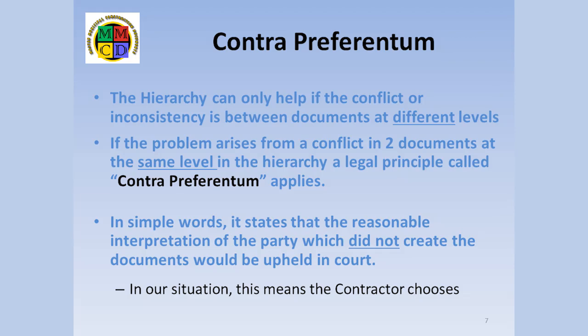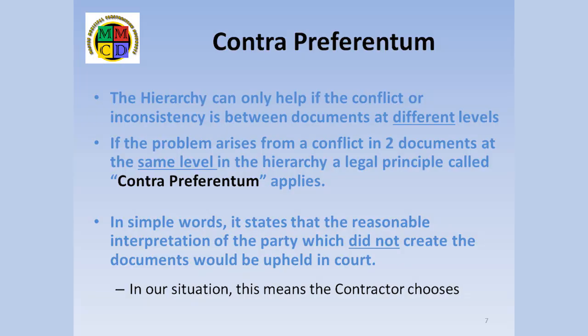It is not possible for an owner to contract out of the contra preferentum principle — that is, to simply state that the contra preferentum principle does not apply. However, owners can insert a supplementary general condition which states something like: if a conflict occurs, the contractor is to follow the instructions for the more expensive option. This will clarify the situation for all involved, but it can open the door to additional costs which, being unaware of the conflict, the owner might not anticipate or wish.